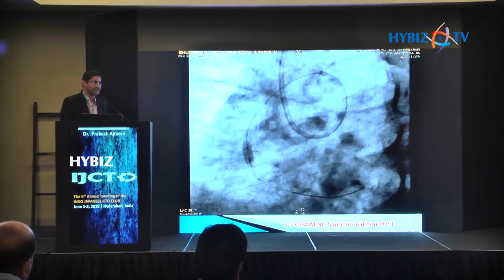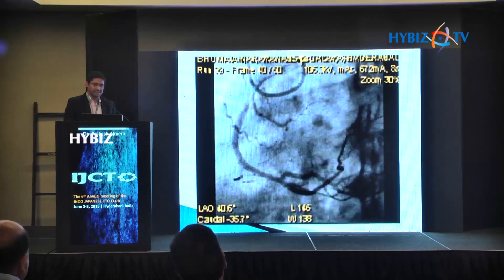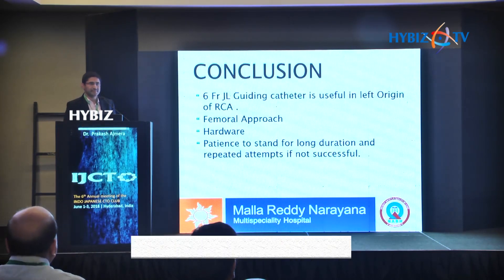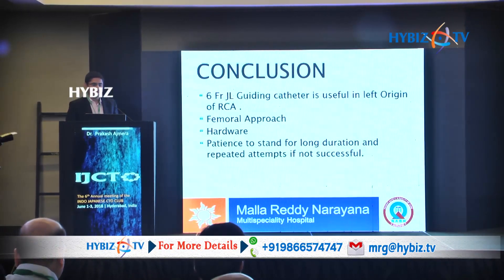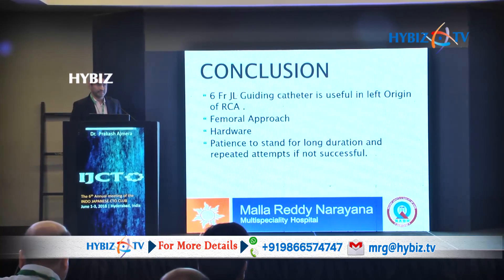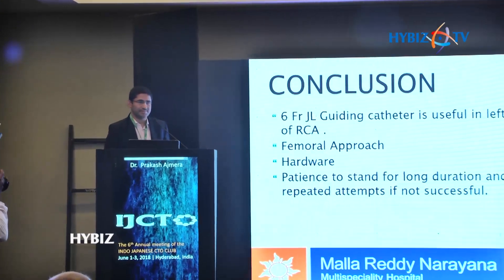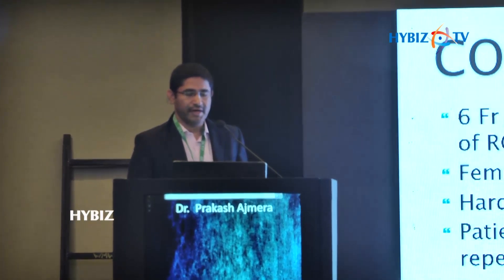After this we post-dilated with a 3.5 x 8 mm NC Sapphire balloon. This was the final result. My take-home message: JL 3.5 guide catheter helped a lot in this patient. Femoral approach should be taken when there is anomalous RCA. Hardware — guide catheters and CTO guide wires — should be available in your cath lab, you need patience for long procedures, and if you are not successful the first time, trying again may lead to success.